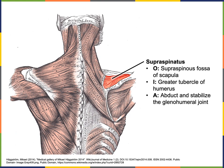The origin of supraspinatus is the supraspinous fossa of the scapula. The insertion of supraspinatus is the greater tubercle of the humerus. The action of supraspinatus is to abduct and stabilize the glenohumeral joint.